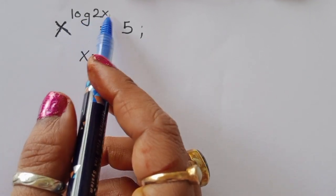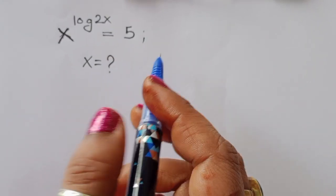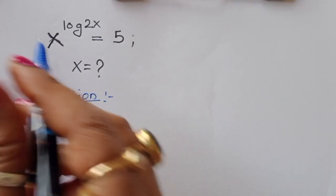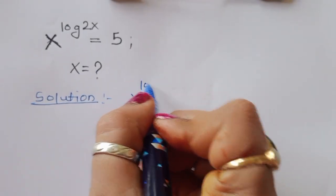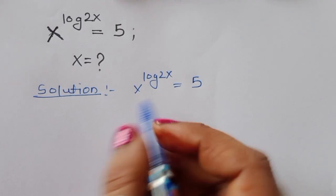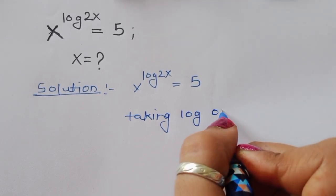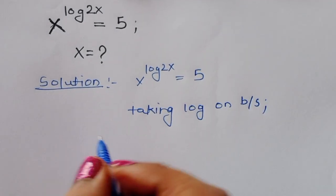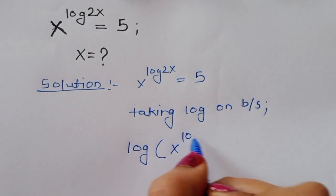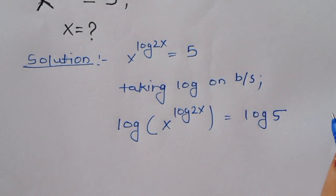The question is: given x raised to the power log(2x) is equal to 5, we have to find the value of x. To solve this, we take log on both sides, giving us log of x^(log(2x)) is equal to log of 5.